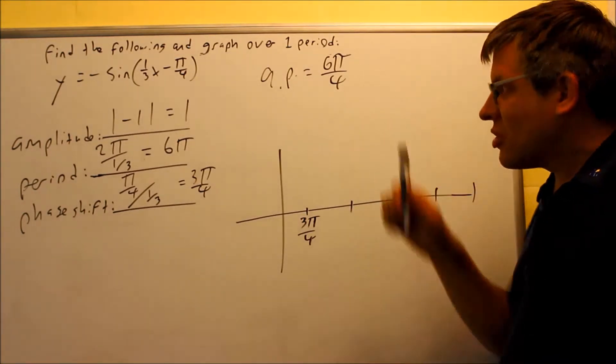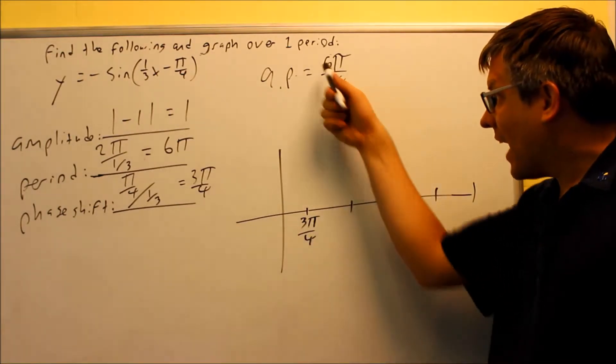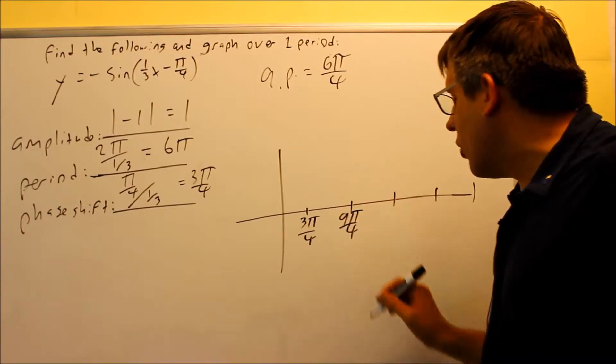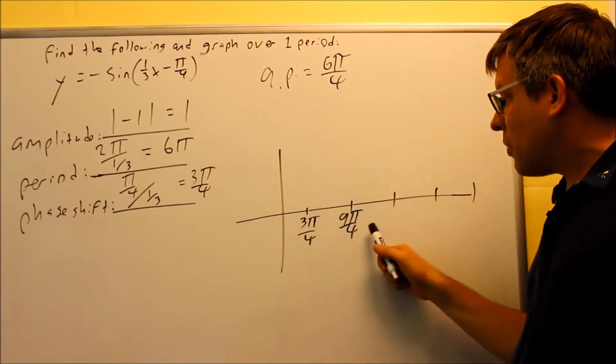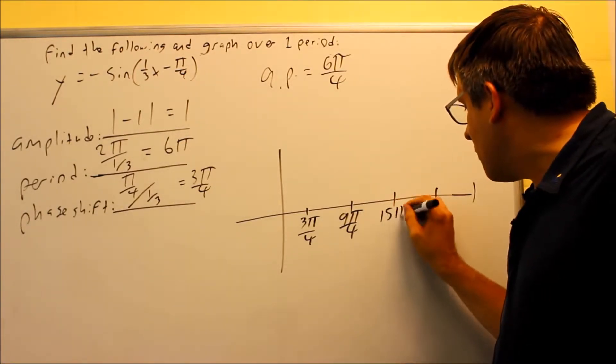Now again, we can find them by just simply adding the quarter point. So if I start with 3π/4, I'm going to add 6π/4 to it to get the next one. That's going to give me 9π/4. If I add another 6π/4 to this, 9 plus 6 is 15, so 15π/4.